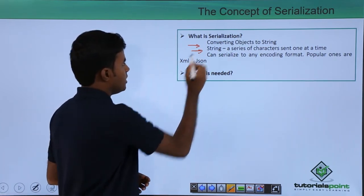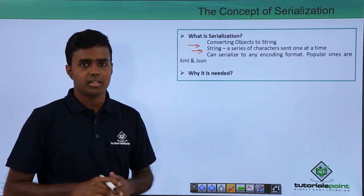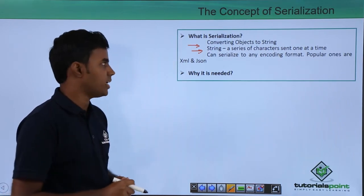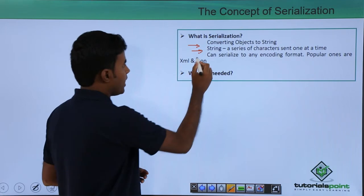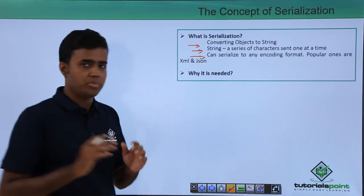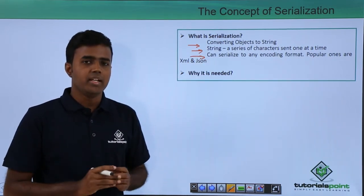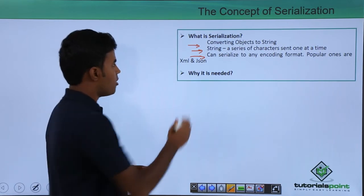What is a string? A string is nothing but a series of characters that are being sent out one at a time. You can actually serialize an object to a string in any encoding format, and the popular ones are XML and JSON.